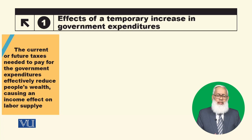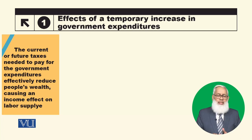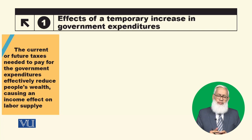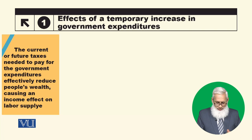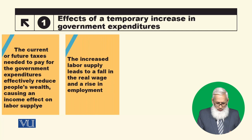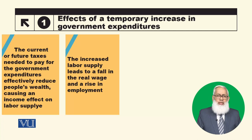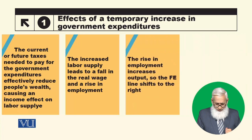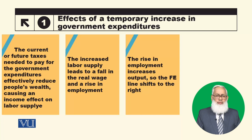This leads to an increase in labor supply. The increased labor supply leads to a fall in the real wage and a rise in the employment level. When the labor supply curve shifts in the labor market, the real wage falls and the employment level increases. The rise in employment increases output, so the FE line shifts rightward.